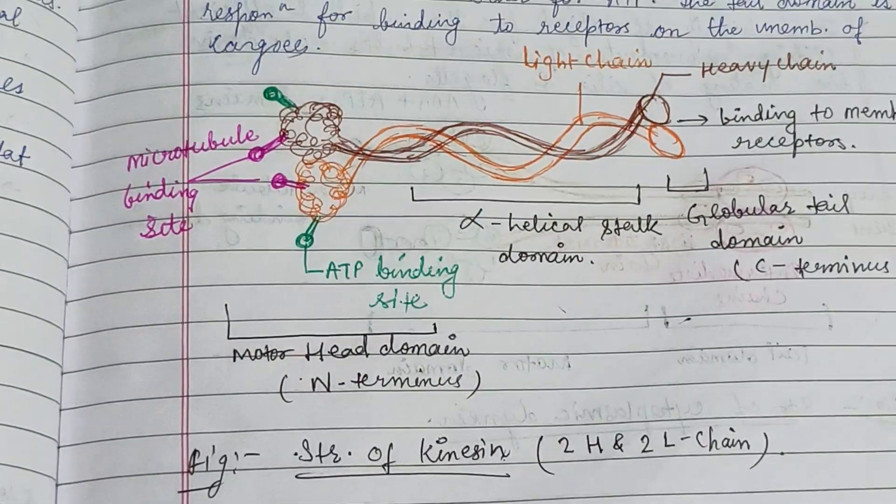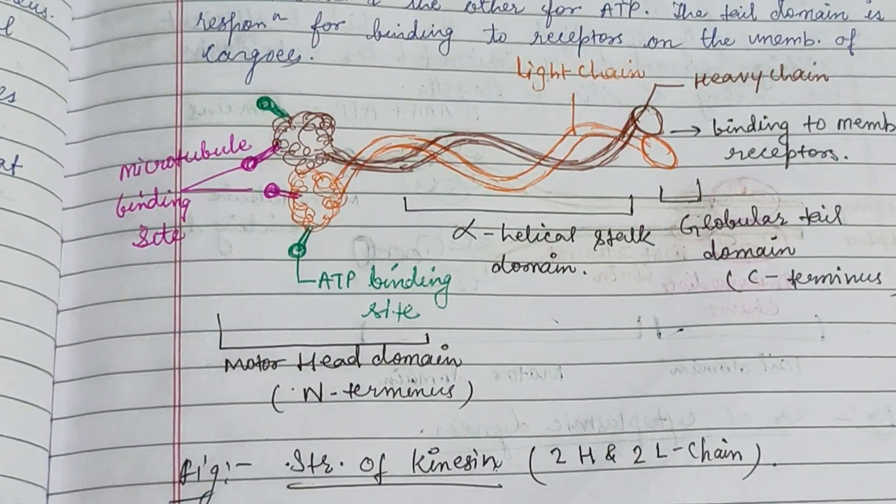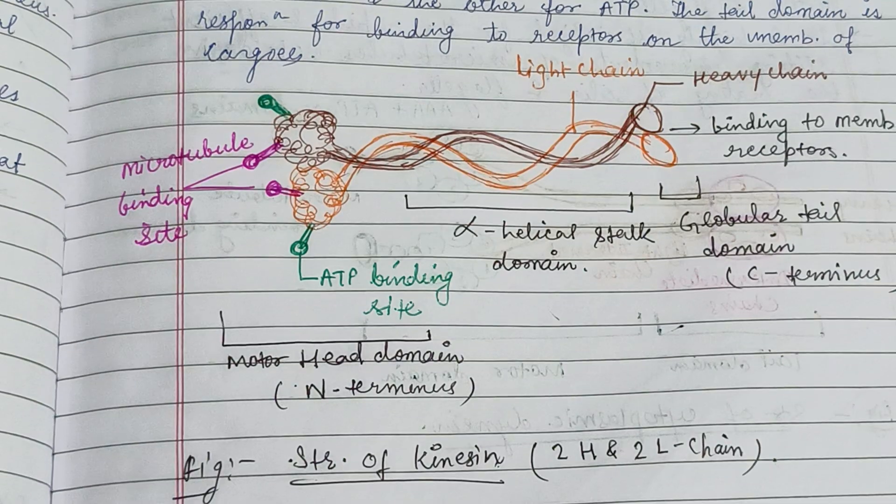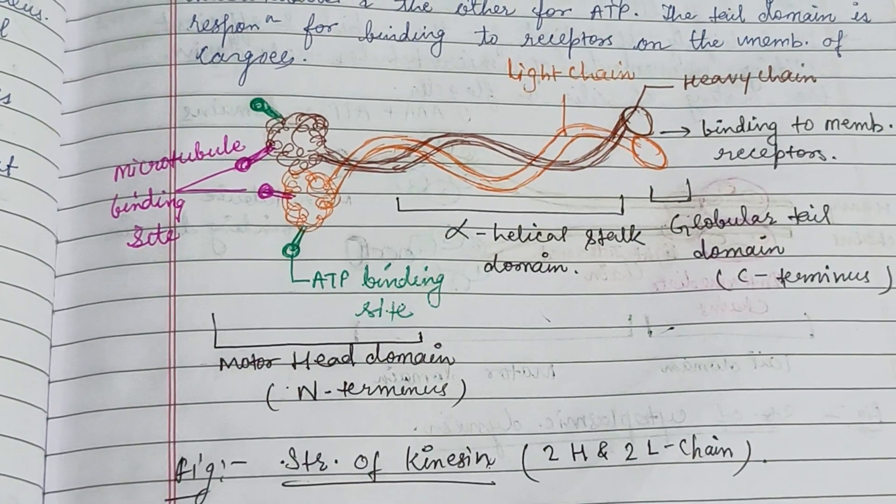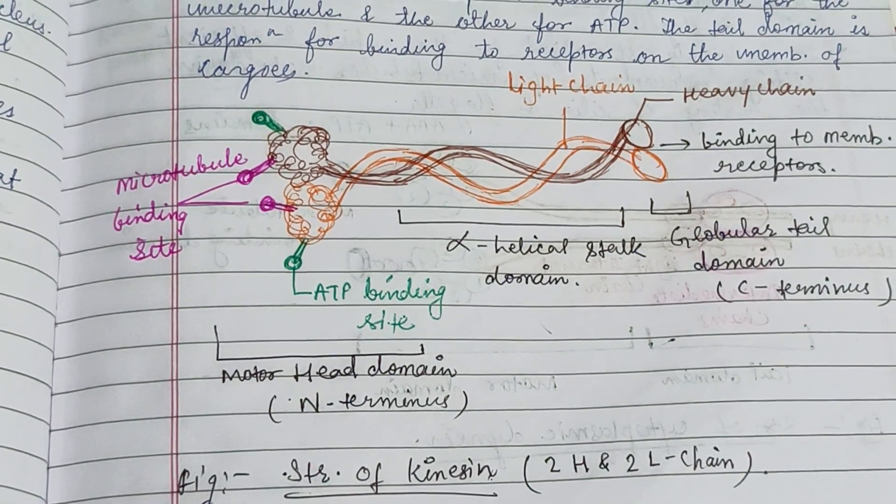The structure of kinesin includes two head domains and two light chains — that is, two heavy and two light chains.